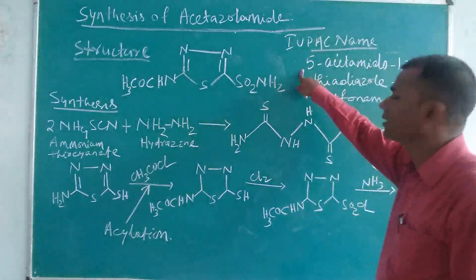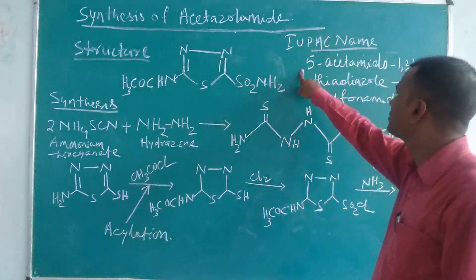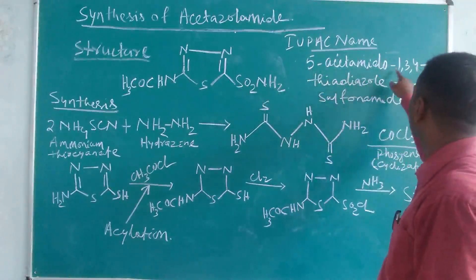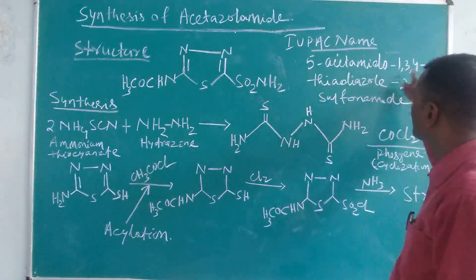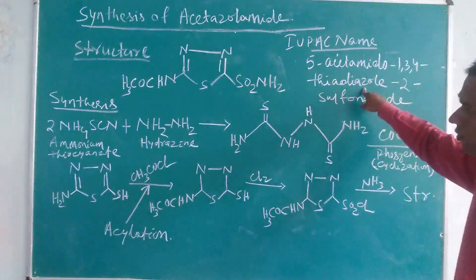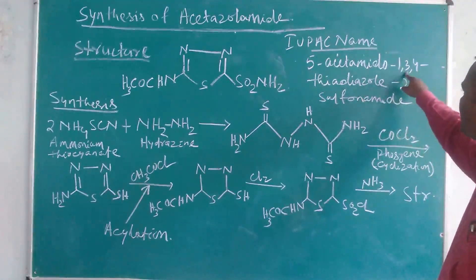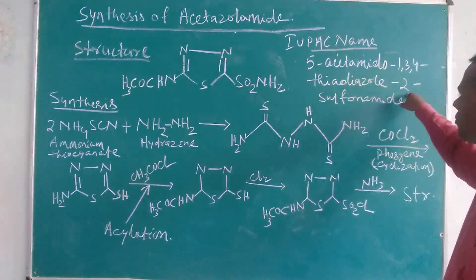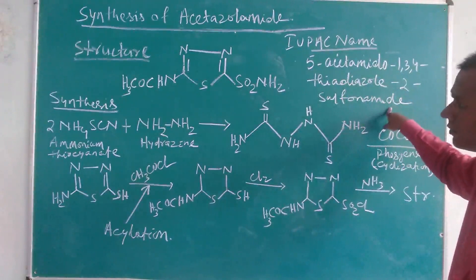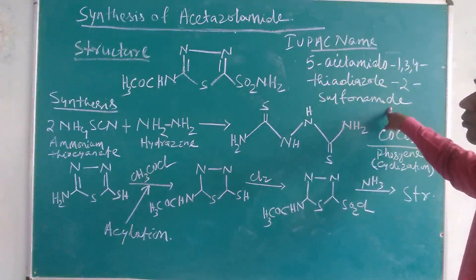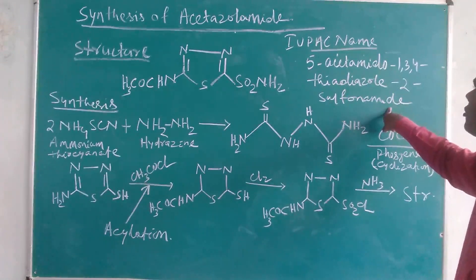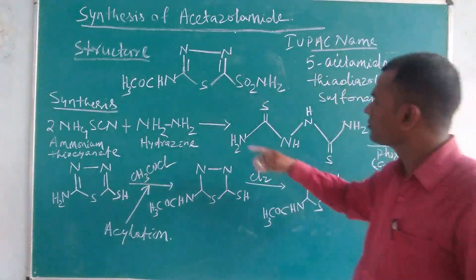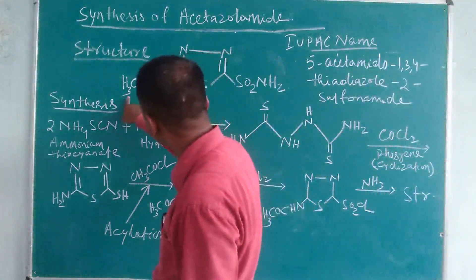This is the IUPAC name of acetazolamide. The IUPAC name is: 5-acetamido-1,3,4-thiadiazole-2-sulfonamide. Here, 5-acetamido refers to this acetamido group.